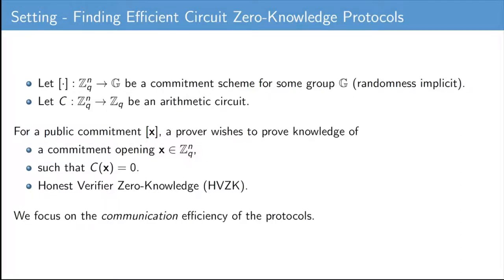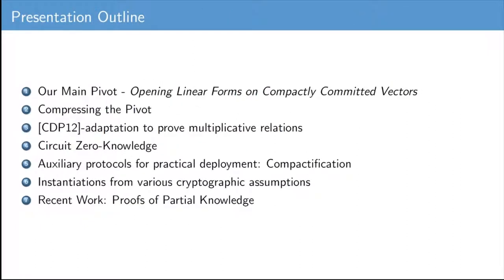In this work, we will focus on the communication efficiency of the protocols. The remainder of this presentation will contain the following elements. We will start with our main pivot, which is a standard sigma protocol for opening linear forms on compactly committed vectors. Second, we will show how to reduce the communication complexity of this protocol down to logarithmic. Three, we will show how to prove multiplicative relations. Four, we will show how to combine these ingredients to achieve circuit zero-knowledge protocols. Five, we will supply some compactification techniques required for many practical scenarios. Six, we will show that this entire framework can be instantiated from various cryptographic assumptions. And finally, we mention recent follow-up work on proofs of partial knowledge.